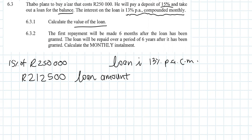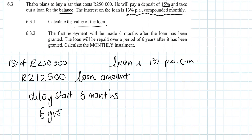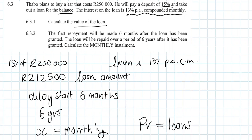Question 6.3.2: The first repayment is made six months after the loan has been granted — this is a delayed start question, with a six-month delay. The loan will be repaid over a period of six years after it has been granted. We want to find the monthly installments, which is x. Since it's a loan, this is a present value question.